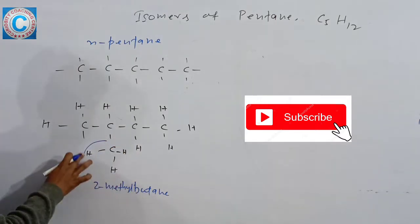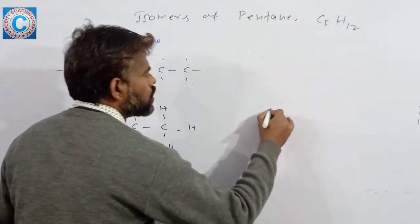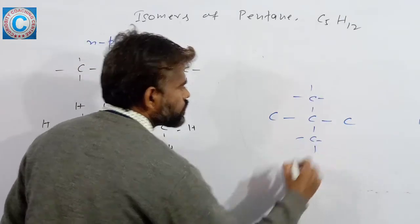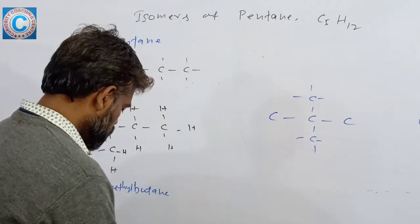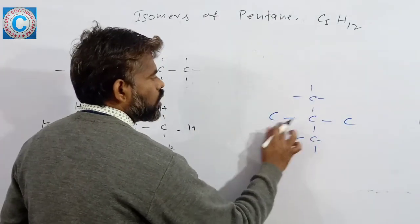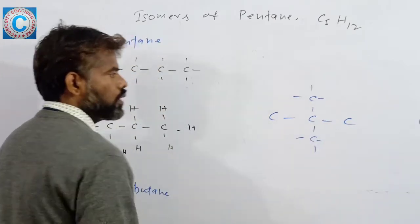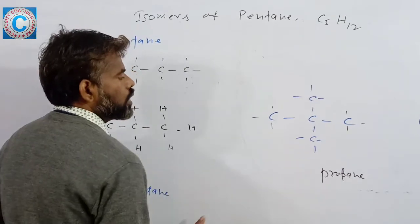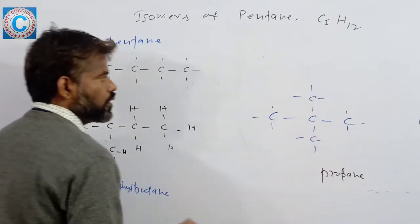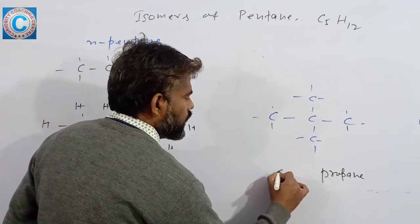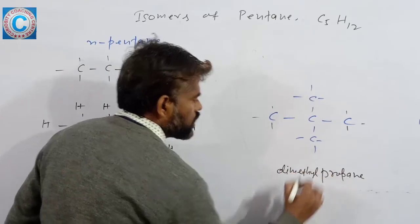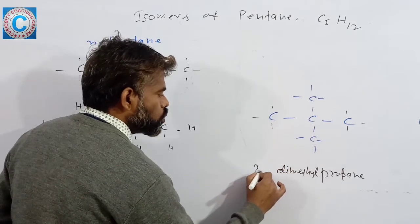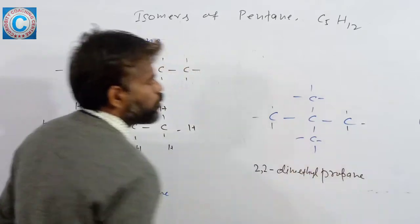Next, 3 carbons with 2 methyl groups at the second carbon. As we can see, the longest chain is of 3 carbons, and there are 2 methyl groups — one here and one here — so it's dimethyl. Both methyl groups are attached to the second carbon, so it's 2,2-dimethylpropane.